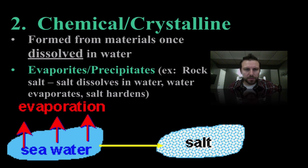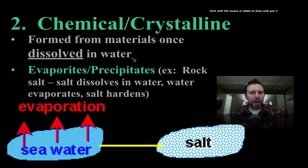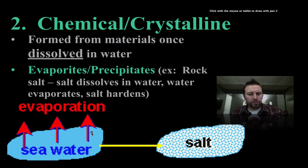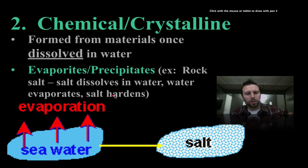Next, we have our chemical or crystalline sedimentary rocks. These form from materials once dissolved in water. The water — in this case, seawater — evaporates, leaving behind ions that eventually form salts. These crystals accumulate to give us our evaporites or precipitates. Rock salt is a good example: salt dissolved in water, water evaporates, and the salt hardens leaving those crystals behind.